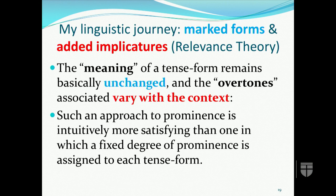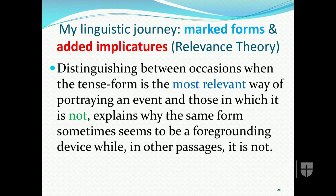I argued in a 2010 article on aspect and prominence in the synoptic accounts of Jesus' entry into Jerusalem, distinguishing between the meaning of a tense form such as the imperfect — which remains basically unchanged — and the overtones associated with it, which vary with context. This results in an approach to prominence that is intuitively more satisfying than one in which a fixed degree of prominence is assigned to each tense form. It is also helpful to distinguish between occasions when the tense form is the most relevant way of portraying each event and those in which it is not, explaining why the same form sometimes seems to be a foregrounding device and in other passages it is not.